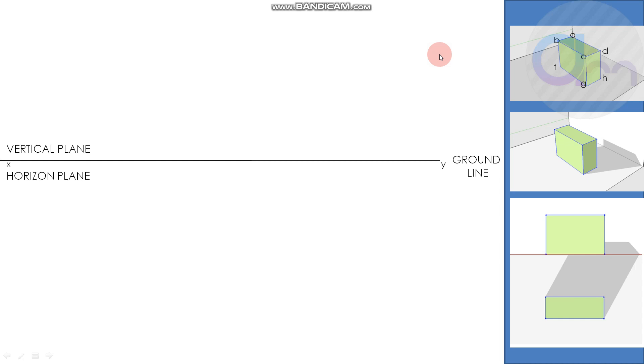Welcome to the tutorial video of how to draw the sciography of a rectangular block. You can see this is the ground line, the XY line between the vertical plane and the horizontal plane. We can see the vertical plane and the horizontal plane, and we have taken a rectangular block.